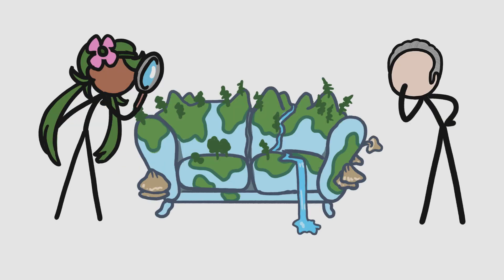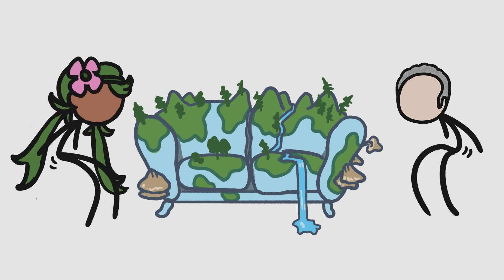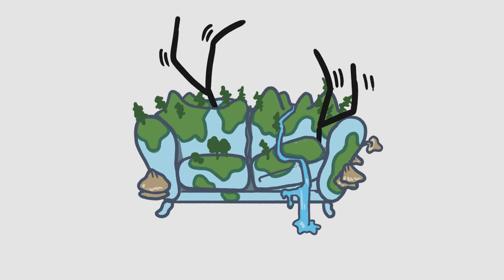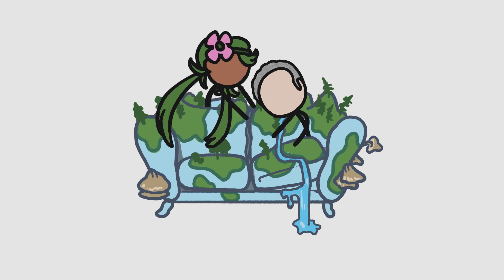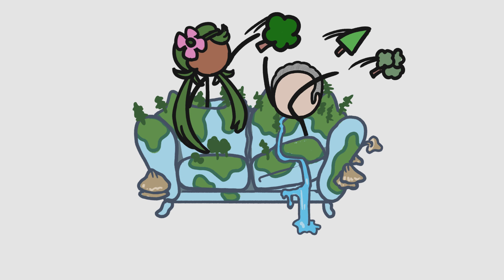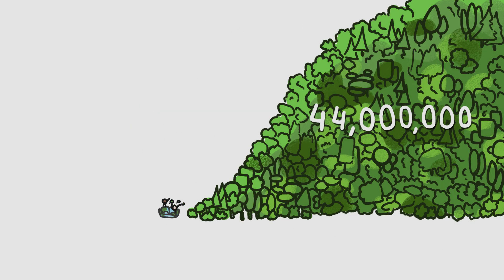Recently, a team of researchers, including our very own treecologist Peter Reich, used the couch candy protocol to estimate how many undiscovered tree species live on Earth. Instead of grabbing every candy they could reach, they grabbed data about every individual tree catalogued by scientists — about 44 million trees and about 64,000 different species.